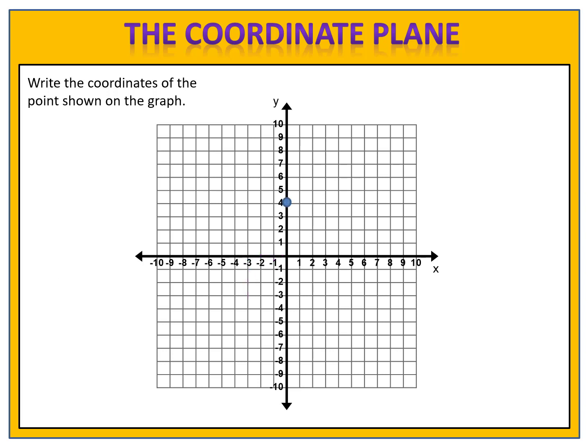How about a point on the y-axis? We first look at the x value, go down to the x-axis, and we are at 0 on the x-axis. How high are we on the y-axis? We're at 4. X is 0, y is 4. The point is 0 comma 4.